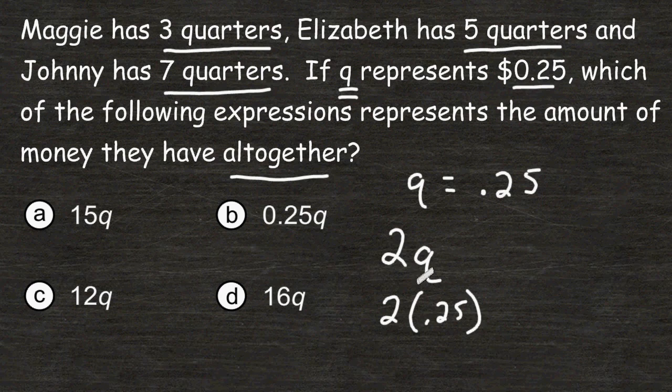So whatever coefficient I stick in front of the variable Q would give me a total amount. Now in the problem, it says that Maggie has 3 quarters. So that's basically 3 times 25 cents, or 3Q.